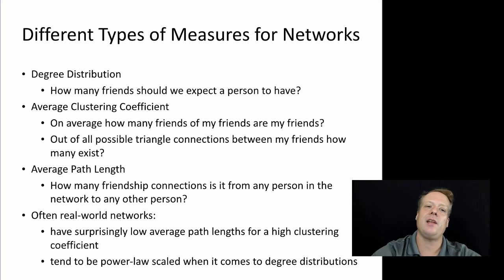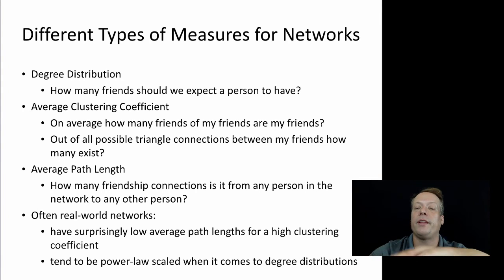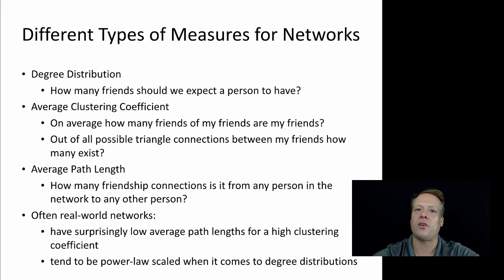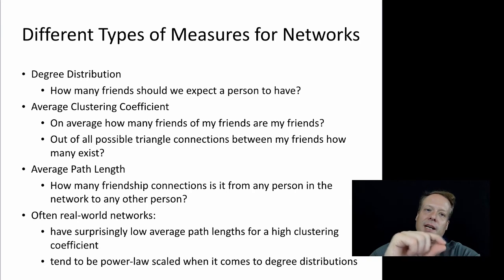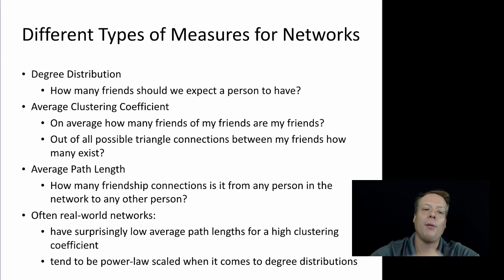If the clustering coefficient is very high, the network is very tightly clustered. If it's very low, the network is not tightly clustered and that individual's friends don't know each other. Another commonly used measure is average path length, which tells you how closely related any one individual is on average to every other individual. When we talk about six degrees of friendship or connection, we are essentially talking about the average path length of that network — how many friendship connections it takes to get from any person to any other person.